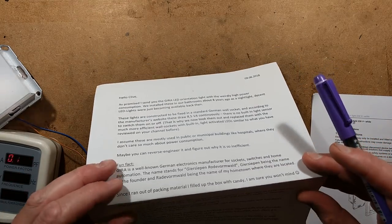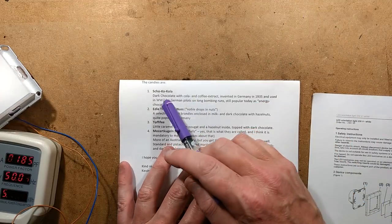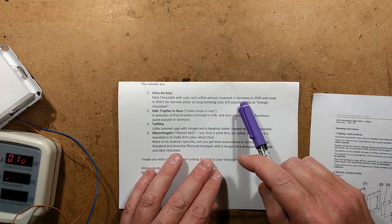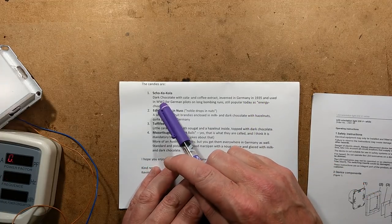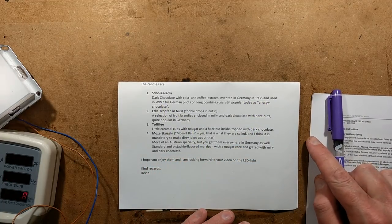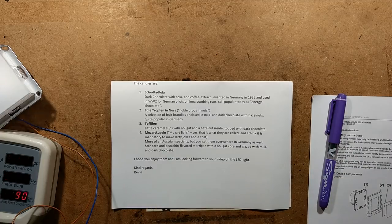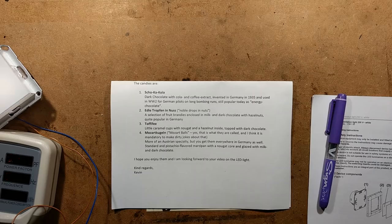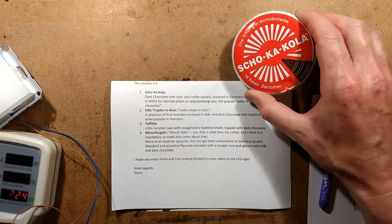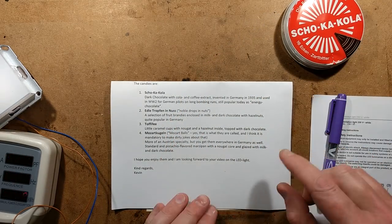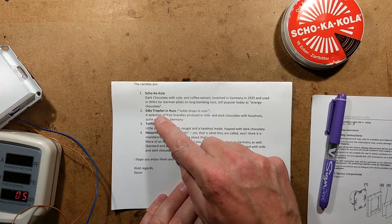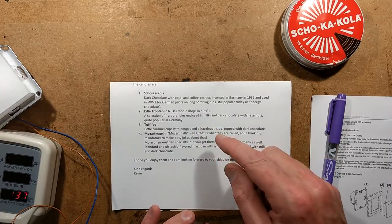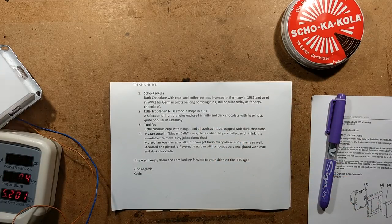Since I ran out of packing material, I've filled up the box with candy. I'm sure you won't mind. Schock-a-Cola. Dark chocolate with cola and coffee extract, invented in Germany in 1935 and used in World War II for German pilots on long bombing runs. Still popular today as energy chocolate. We shall open this at the end of the video and take a look inside it.